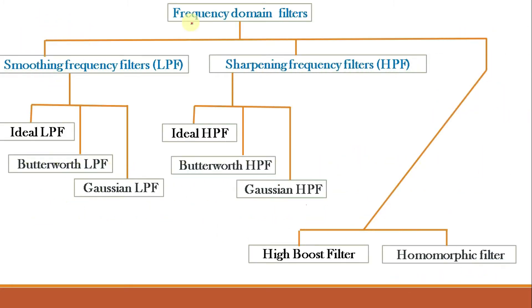We are studying different frequency domain filters from the last few classes, in which we have studied low pass filters and high pass filters. In the previous video class we studied the high boost filter, and in this video class we will study the homomorphic filter. We are taking this separately like the high boost filter because it takes a different approach compared to the frequency domain filters studied so far. Here the approach is to separate out the illumination and the reflectance coefficients, increase the reflectance coefficient, and decrease the illumination coefficient to enhance the image.